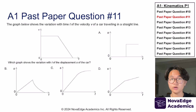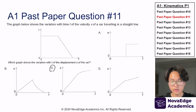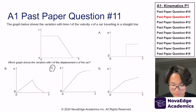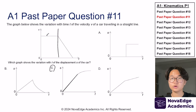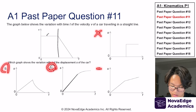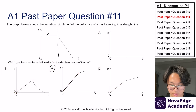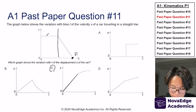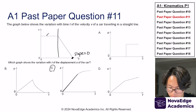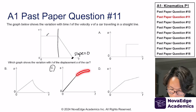Now let's try this past paper from topic A1. If you answered C, you are absolutely correct. We look at the displacement-time graph as representative of the area under the velocity-time curve. Up until a certain point, velocity is constant, so the slope of the displacement-time graph is also constant — that eliminates A. After that point, velocity is decreasing, meaning the slope is slowly approaching zero. The slope becomes zero where velocity is zero. Answer C is the graph that slowly reaches a slope of zero.